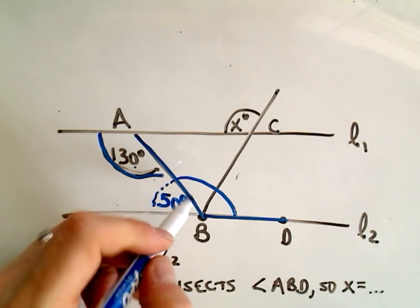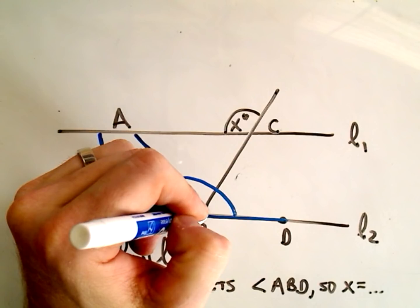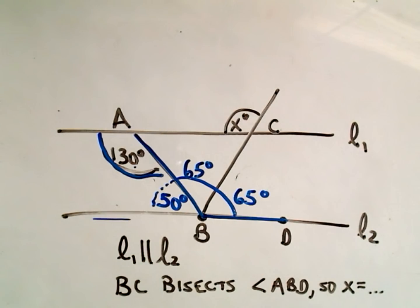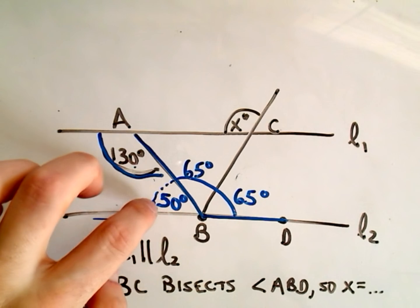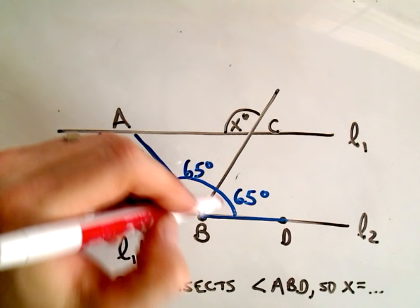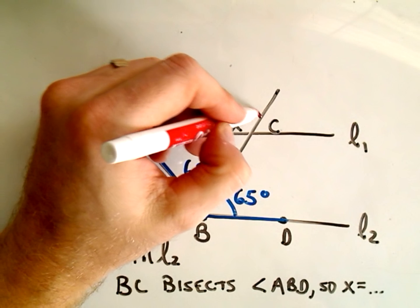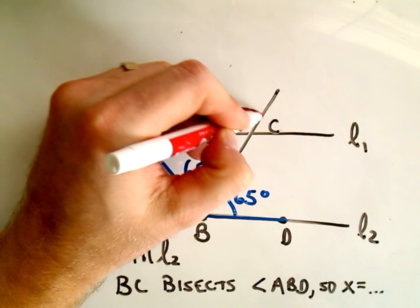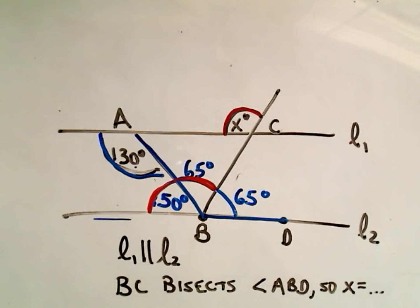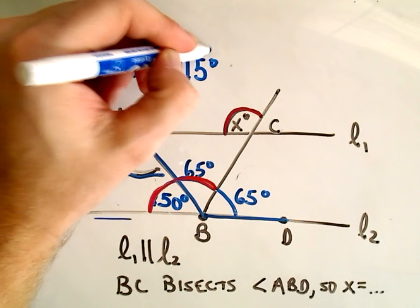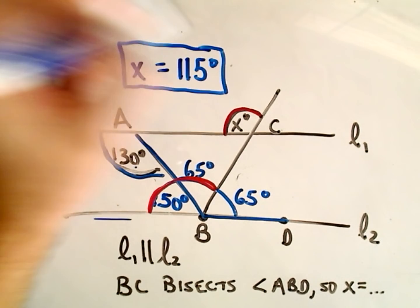And since this angle cuts the 130 angle in two, well, half of 130 is going to be 65 degrees and 65 degrees. So the main thing we're interested, though, is the fact that this angle of 65 degrees plus 50 degrees, this angle is going to be the same thing as the angle X. So if we add 65 and 50, we're going to get that X equals 115 degrees. And that would be our answer.